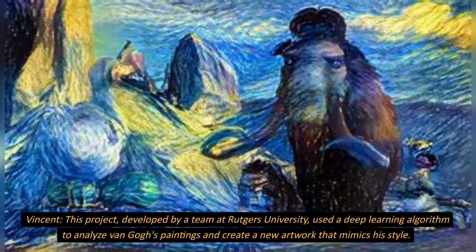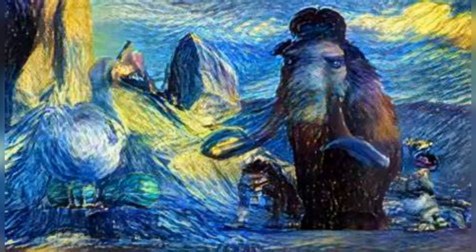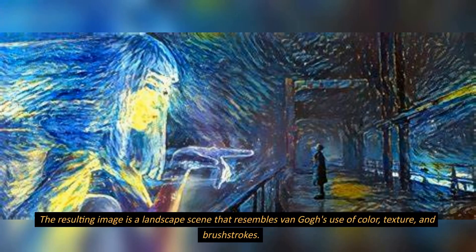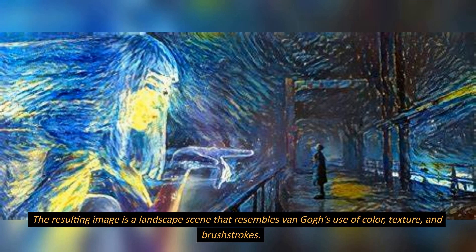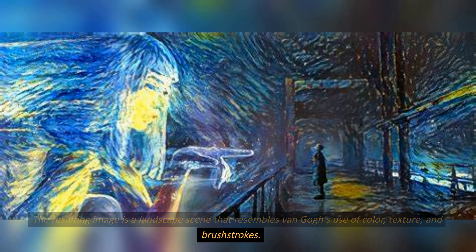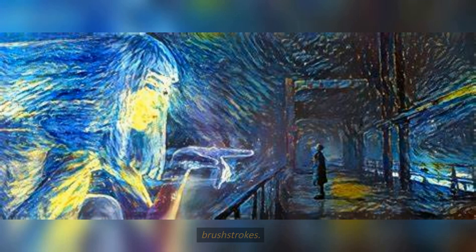Vincent. This project, developed by a team at Rutgers University, used a deep learning algorithm to analyze van Gogh's paintings and create a new artwork that mimics his style. The resulting image is a landscape scene that resembles van Gogh's use of color, texture, and brushstrokes.